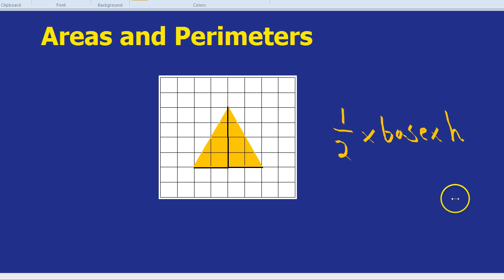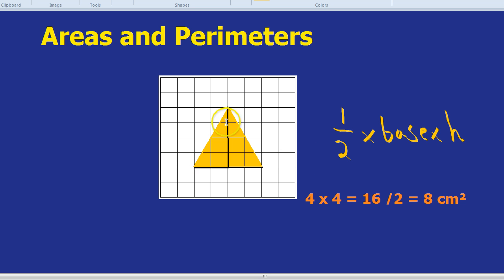And 16 divided by 2 equals 8. So the area of that triangle, without counting out the boxes, which would be a much longer and more inaccurate way of doing it, is 8 centimetres squared. We did the base times the height, divided by 2.